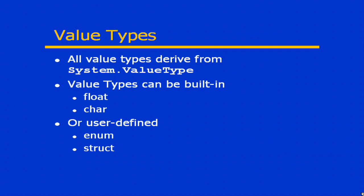All value types basically derive from a single base class, the System.ValueType class. Value types can either be those built-in intrinsic data types, such as float or character, or any of the other built-in types we've already discussed. Or, there may be user-defined value types as well, such as enums or structs. Those are also considered value types.